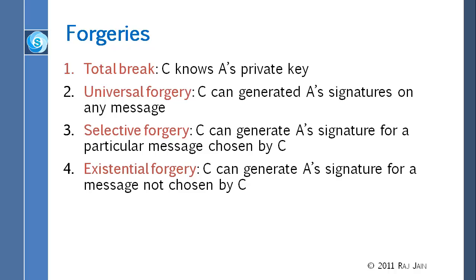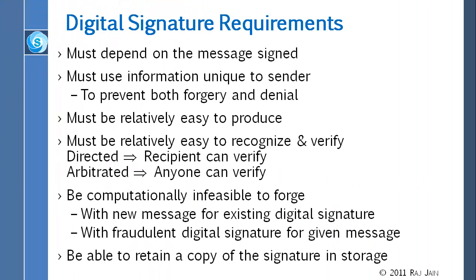Selective forgery: you cannot generate signature on any message, but you can generate a signature for a particular message that C designs. C says, well, I cannot generate for all these, but I can generate for this one. Or it can generate for a message not chosen by C. You give him a message, and he says, okay, here's the signature, without knowing the key. So these are all possible scenarios, and again, I am not sure whether this is the complete list or not. But this is that paper that is cited in the book. They talk about so many attacks and so many forgeries possible. So we just make the list.